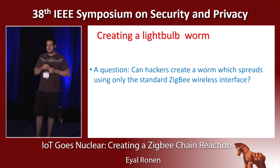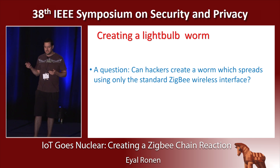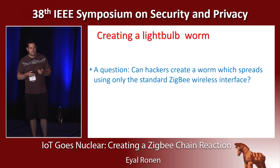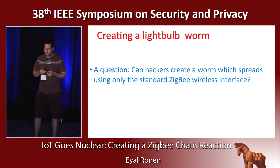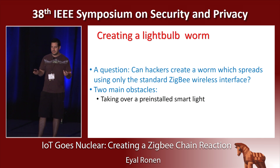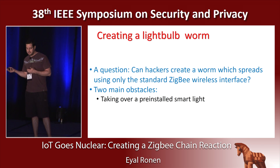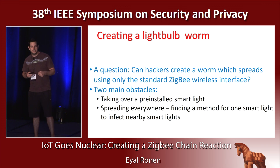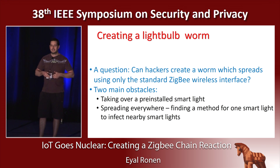We tested the idea of creating a worm which basically spreads between lamps using only the standard ZigBee wireless protocol. To do that, we need to overcome two main obstacles. The first is how to take over a pre-installed light that resides in a different PAN with an unknown encryption key. After we are able to do this, we need to find a way to cause this light to spread the infection and attack its nearby neighbors.